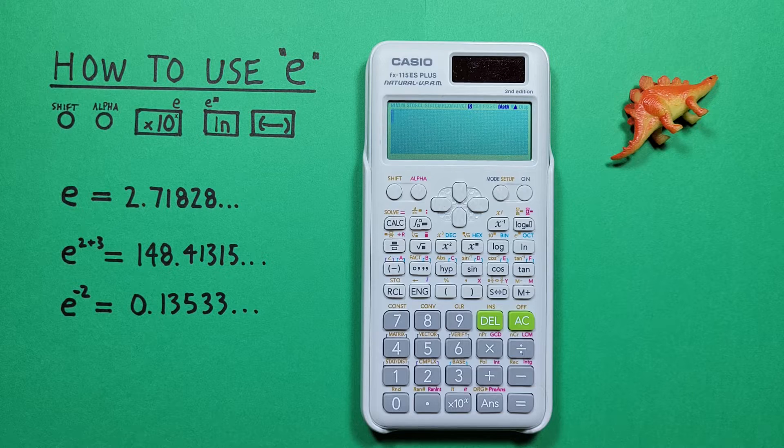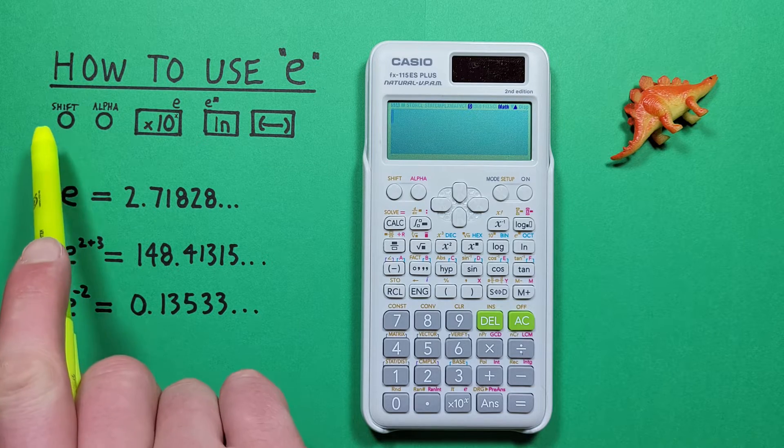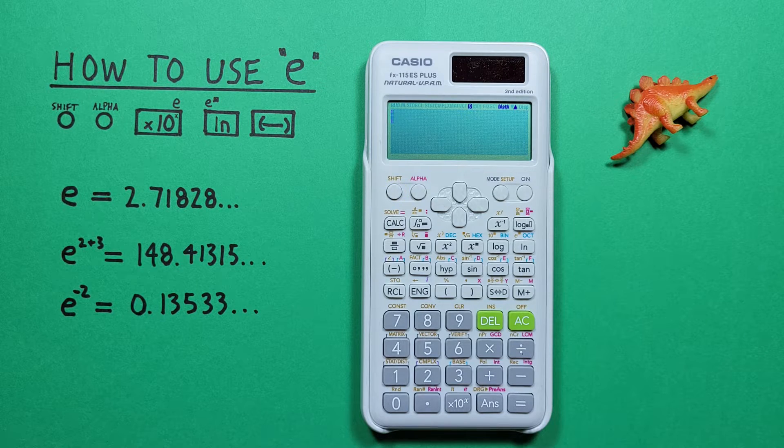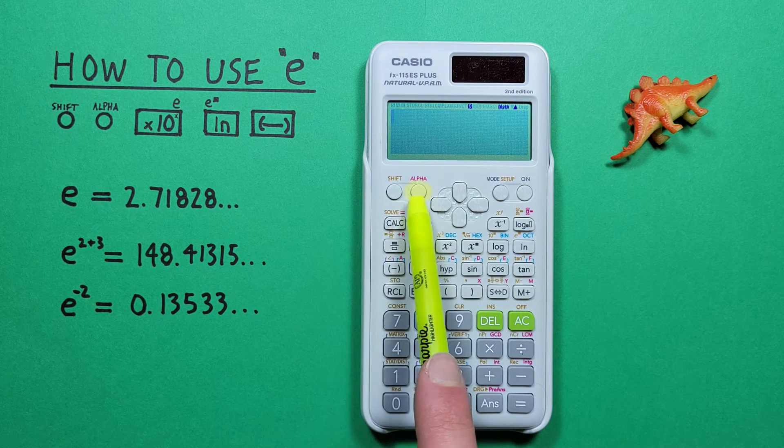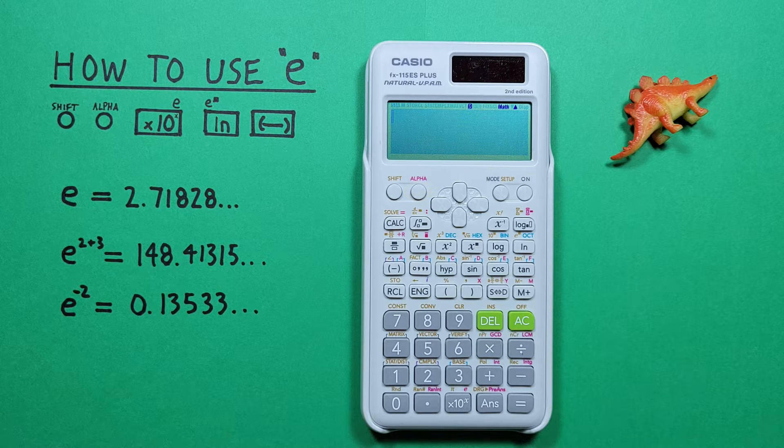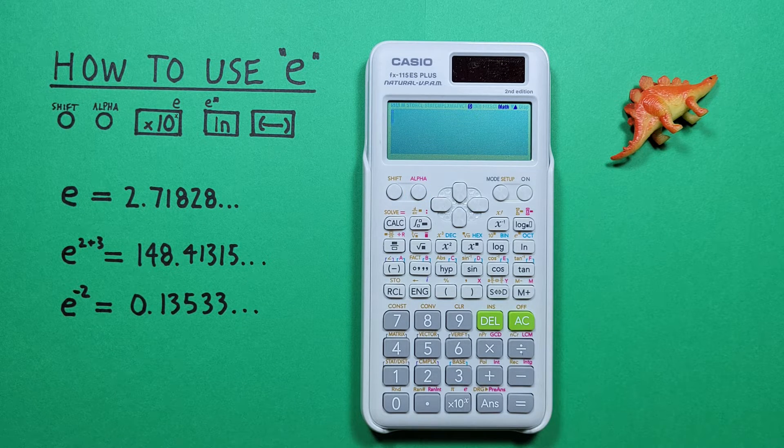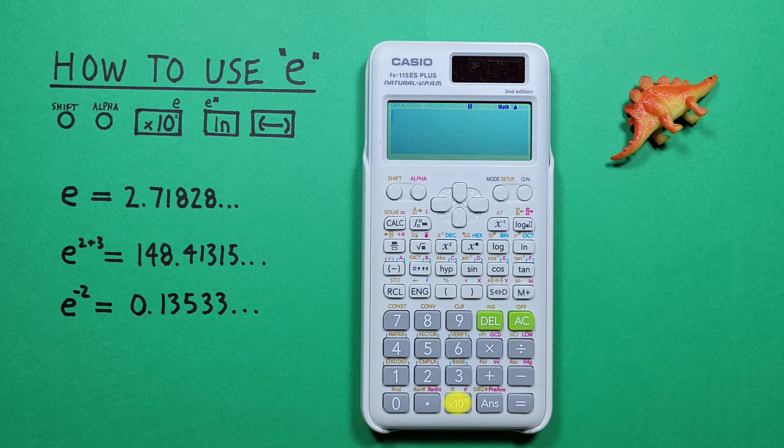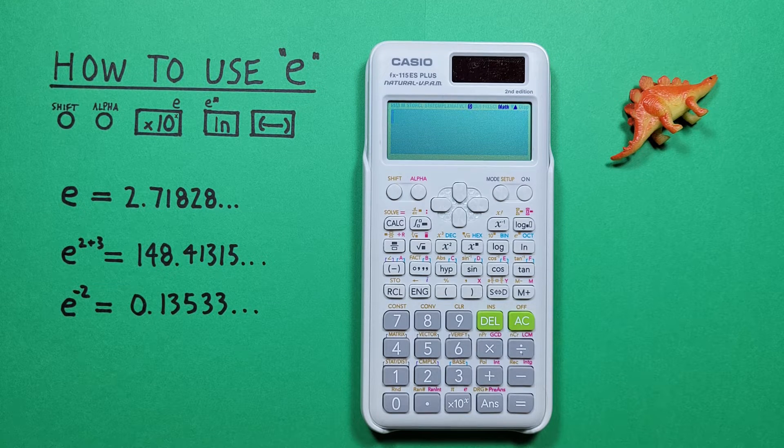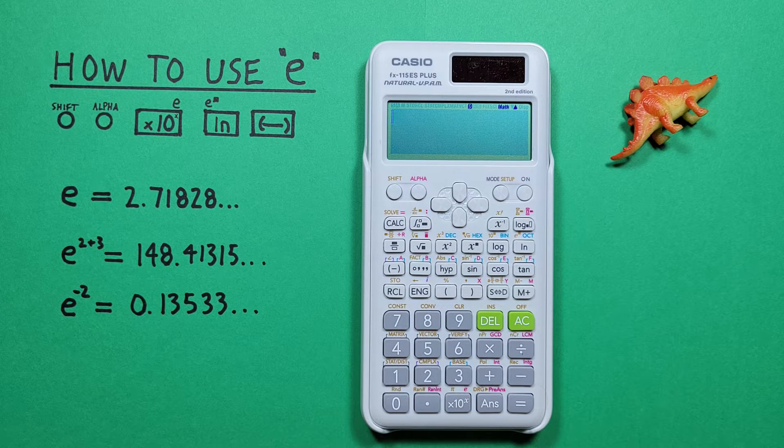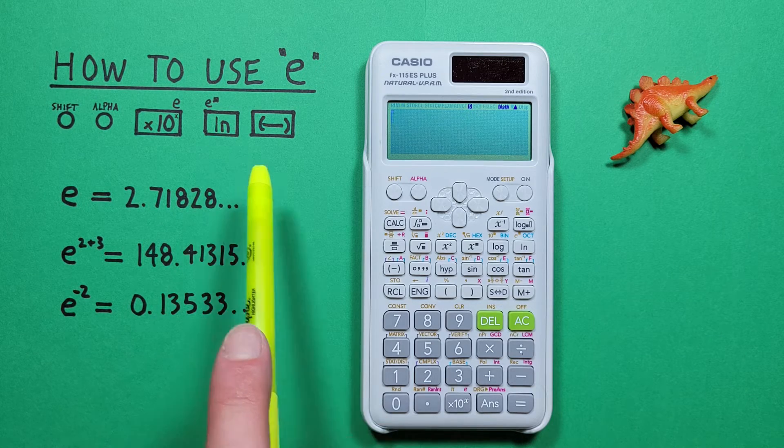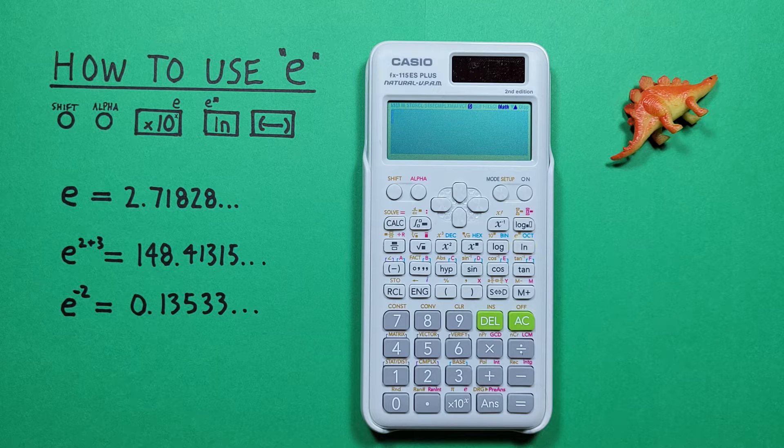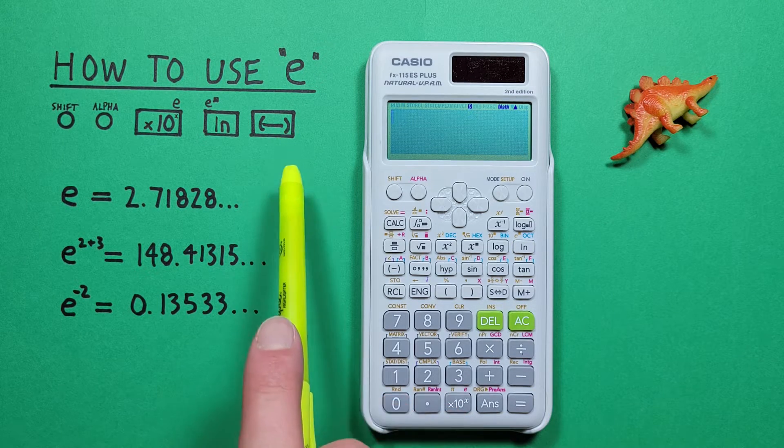To do that, we'll use the shift key located here, the alpha key located here, the times 10 to the x key with the alpha function of e located here, the ln or natural log key with the second function of e to the power of located here, and the negative key located here.